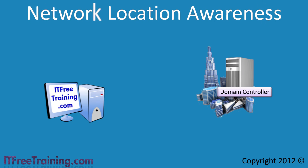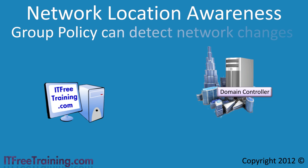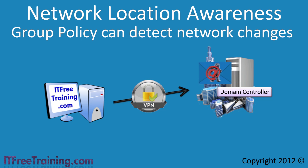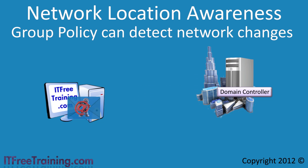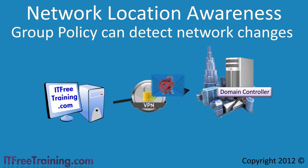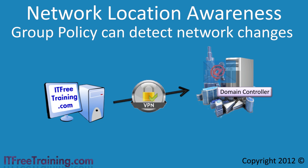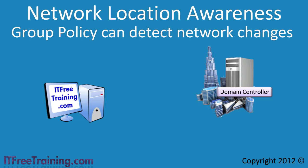The next new feature is that group policy now works with the network location awareness service. This means that group policy can now detect network changes. To understand how this works, consider an isolated computer that connects to the main office using a VPN connection. In this example, the remote user connects to a head office only to check their email, meaning the VPN connection is only in use for short periods of time. Given that the default refresh time for group policy is 90 minutes, this user may never have group policy refreshed on their computer.